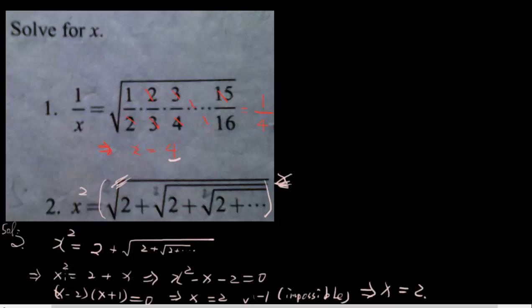That means x squared minus x minus 2 equals 0. So that means x minus 2 times x plus 1. We can factor it: x minus 2 times x plus 1 equals 0.